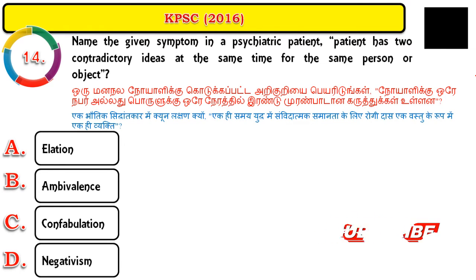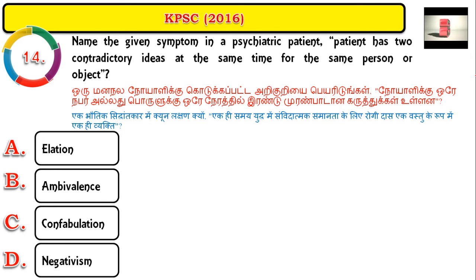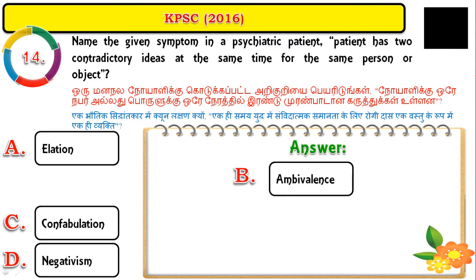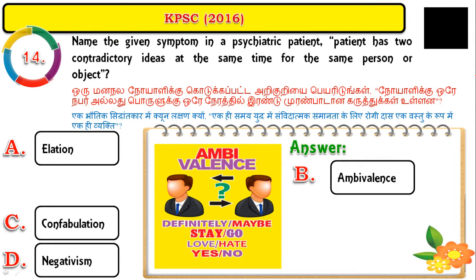Question number fourteen: the symptom where a psychiatric patient has two contradictory ideas at the same time toward the same person or object is called ambivalence. Simply put, the person feels both positive and negative — love or hate, yes or no — toward the same person simultaneously.